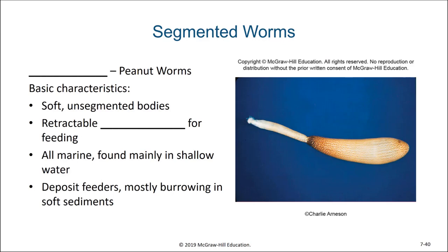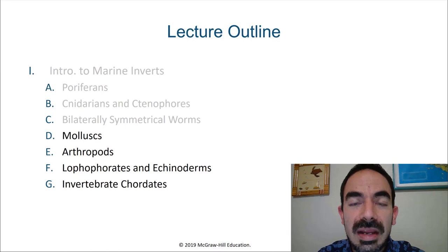The last segmented worms we'll discuss are the sipunculids, or peanut worms, which have secondarily lost their segmentation. The sipunculids have a retractable proboscis used for feeding. They are found mainly in shallow water and are deposit feeders burrowing in soft sediments. That finishes our discussion of worms. Before our next video, I'd like you to think about what your favorite type of seafood is — mine is coming up in the next video. See you then.